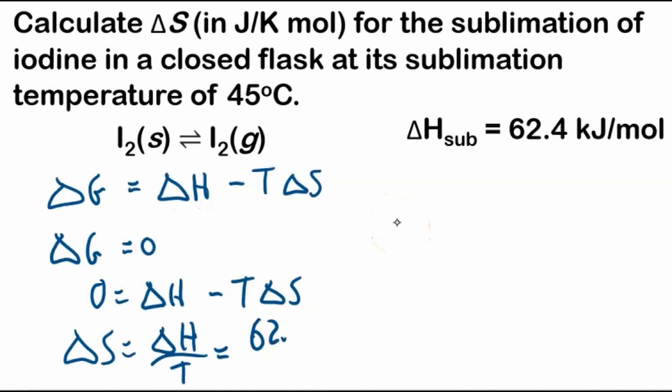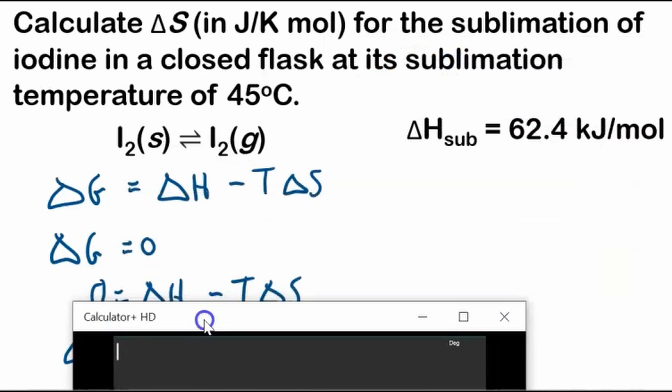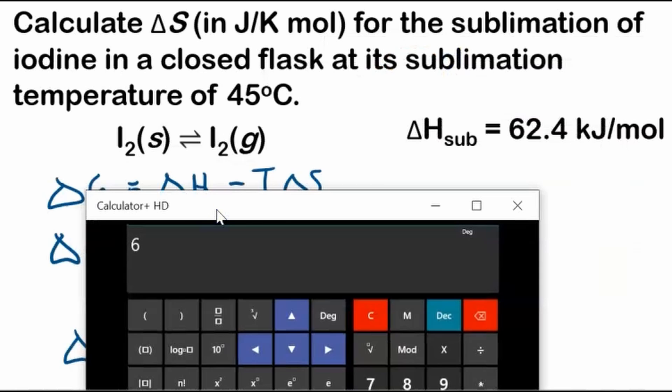And we'll just plug and chug 62.4 kilojoules. I'll do times 10 to the 3 joules. Oh yeah, we do, because this is in joules. Usually entropy is in joules divided by the temperature. Now the temperature is 45 degrees Celsius, but we need it in Kelvin. So 273.15 plus 45 degrees Celsius.